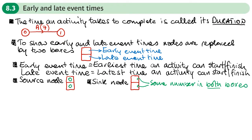In the source node, the two numbers in the boxes will always be zero. And in the sink node, these two values will always be the same.